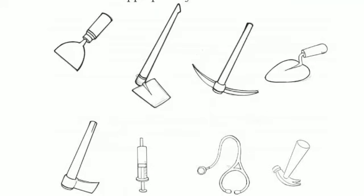Now you can see a list of tools given in your textbook. It's an activity. You have to color these tools neatly, and you have to write the name of the tool and what purpose it is used for. You can write over there in your textbook. So here it goes. The first one is a chisel. Chisel is used for carpentry — for making wooden objects.